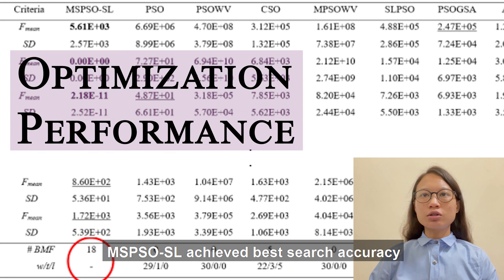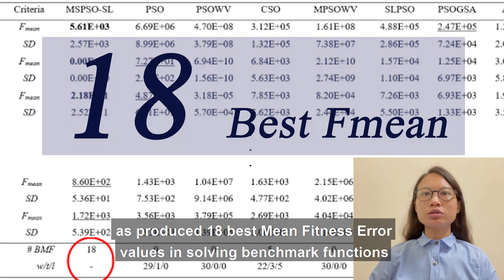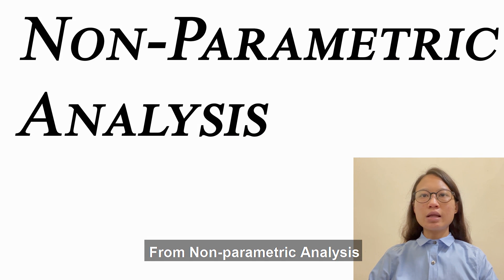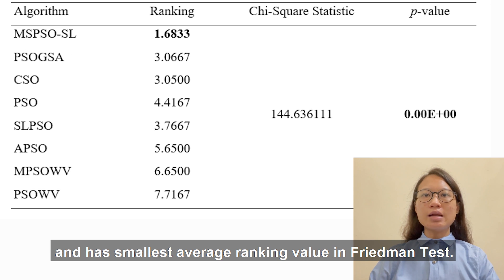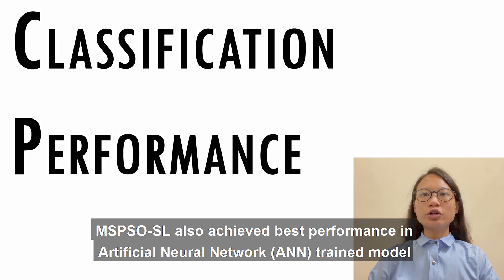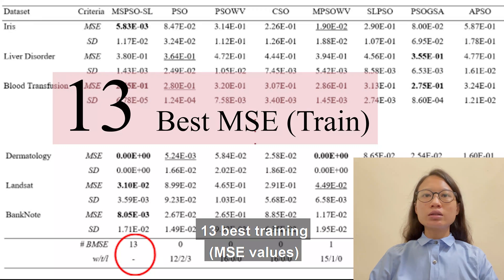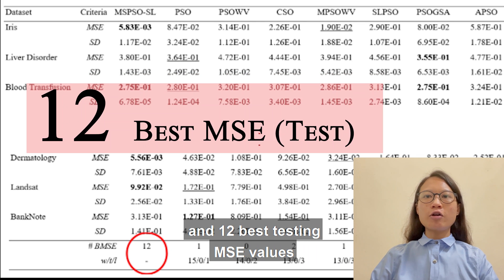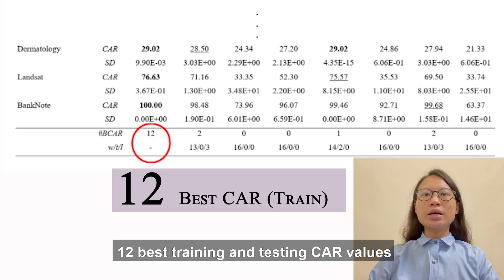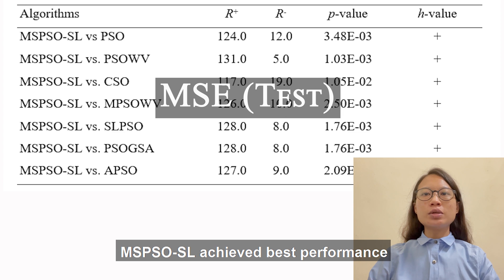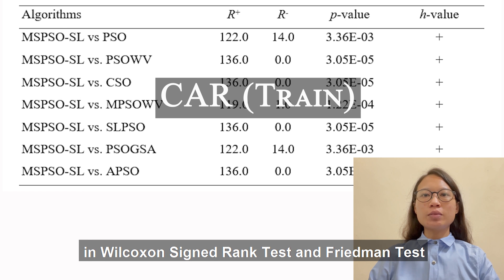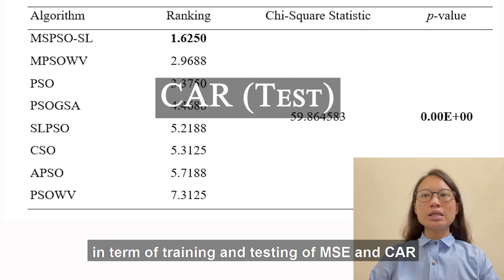From the results, MS-PSO-SL achieved the best search accuracy, producing the best mean fitness error values in solving the benchmark functions. From non-parametric analysis, MS-PSO-SL is significantly better in the Wilcoxon signed-rank test and has the smallest average ranking value in the Friedman test. MS-PSO-SL also achieved the best performance in the ANN trained model: 13 best training and 12 best testing MSE values, and 12 best training and testing CR values. MS-PSO-SL achieved best performance in Wilcoxon and Friedman tests in terms of both training and testing MSE and CR.